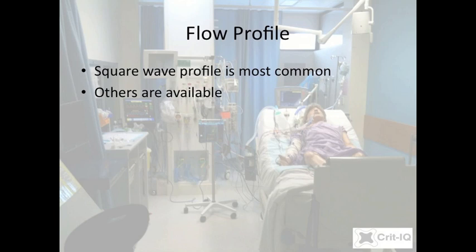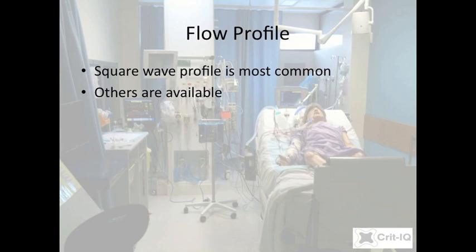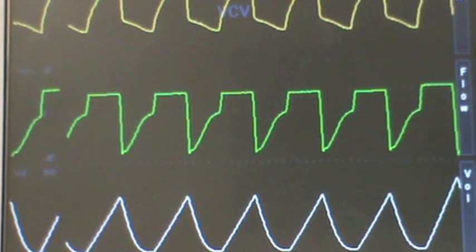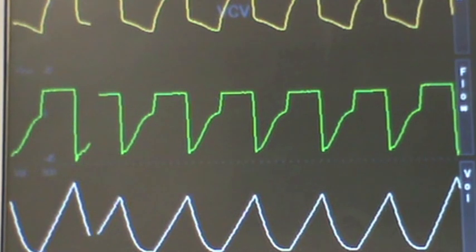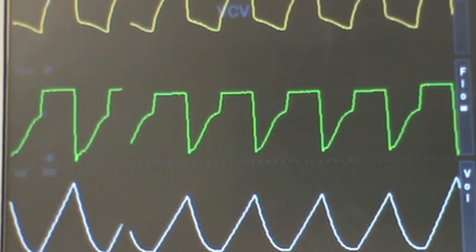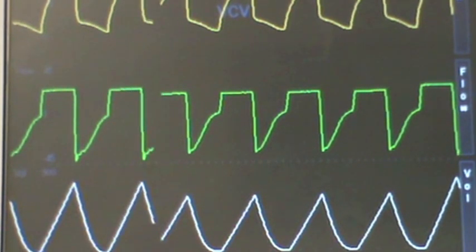If a set volume is delivered uniformly over a set inspiratory period, the flow will be constant. On a flow-time graph, this appears as a square wave — a term used to define the profile of the breath. Some ventilators deliver the volume with a different profile, though the rationale is beyond the scope of this vodcast. In almost all circumstances, the default option is more than acceptable.